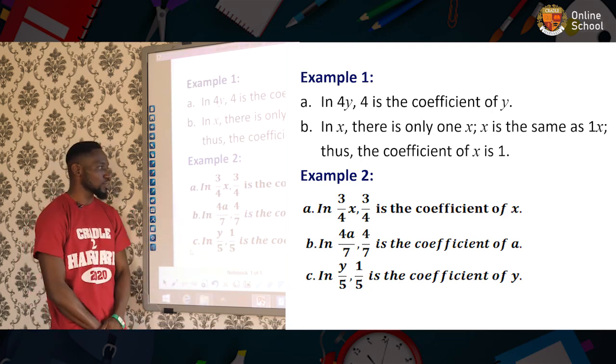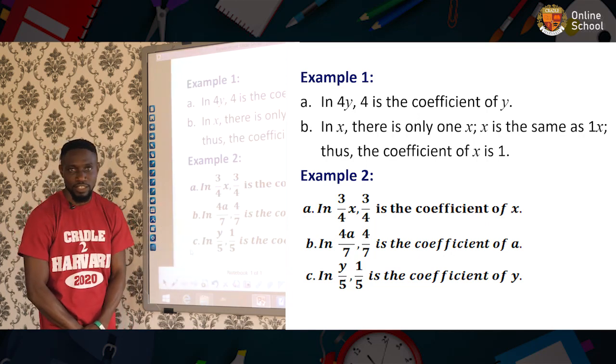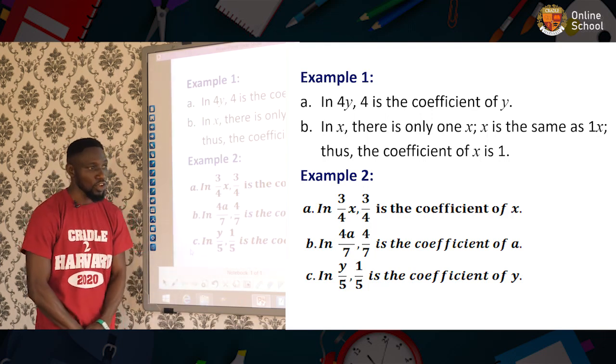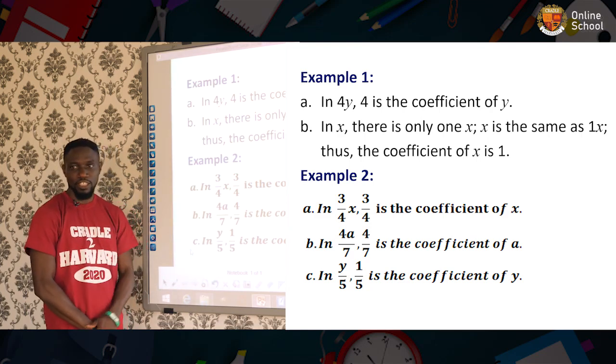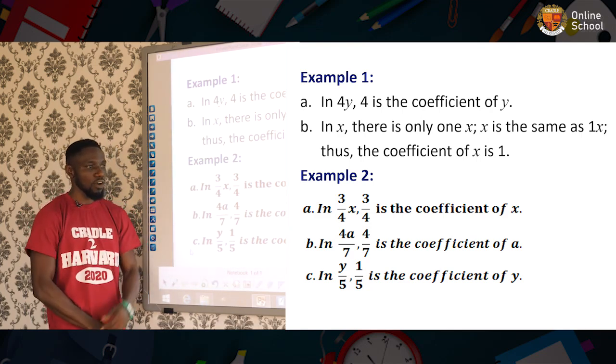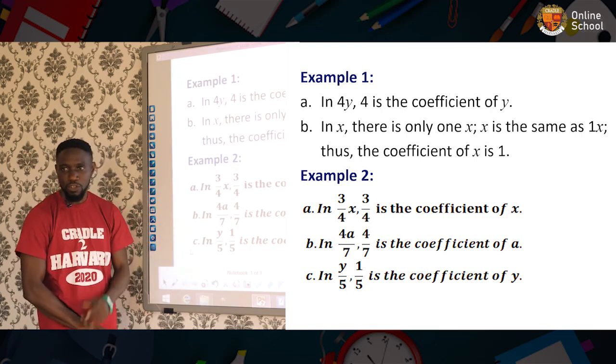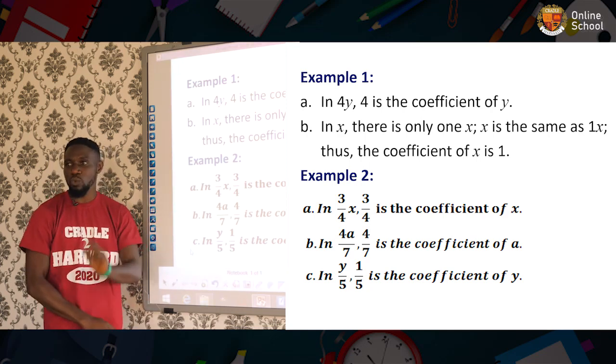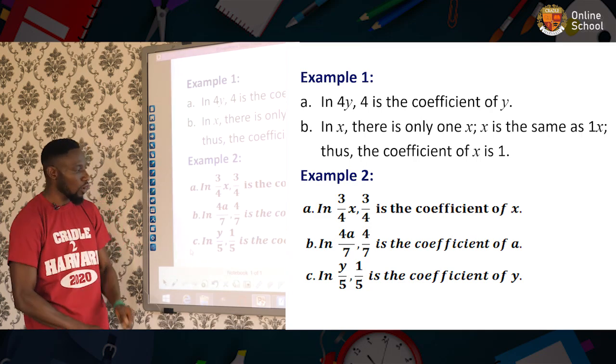Let's look at example two as stated. This is fraction. 3 over 4x. We say 3 over 4 is the coefficient of x. Also, we have 4n over 7. Same thing as 4 over 7 is the coefficient of n. And finally, we say in y over 5. Remember, I told you x is the same thing as 1x. So when you see the letter y, it's the same thing as 1y. So we say 1 over 5 is the coefficient of y.